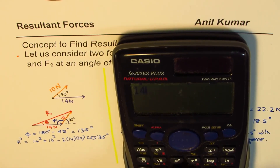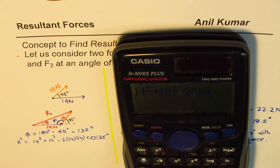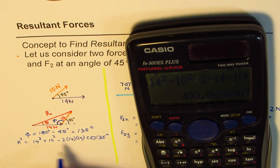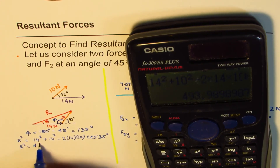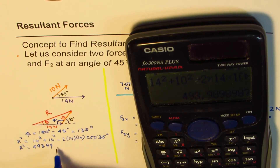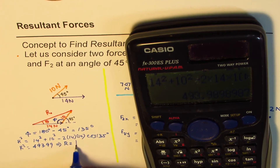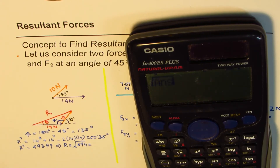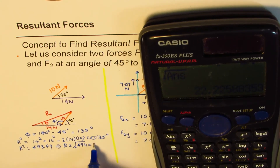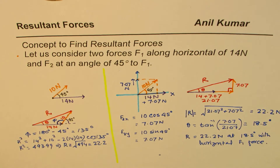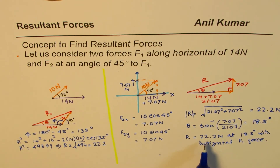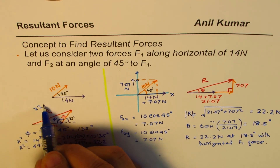Calculating: 14 squared plus 10 squared minus 2 times 14 times 10 times cos 135 degrees gives approximately 493.99. Therefore R squared equals 494, and R equals the square root of that, which is 22.22 Newtons — exactly the same answer as before.